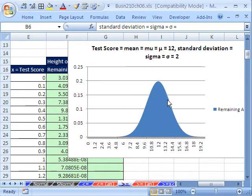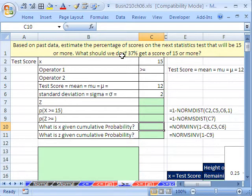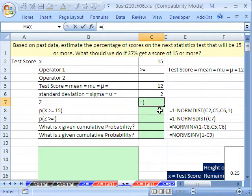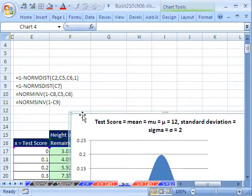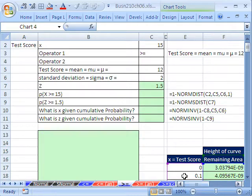Now let's get busy calculating. We want to know what is the probability. We're given this number right here, 37%. What if 37% of the class got 15 or more? We want to calculate from our past data what the probability should be. Let's calculate our z first, number of standard deviations above or below the mean.